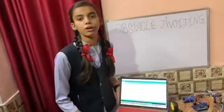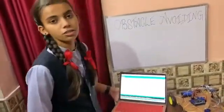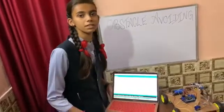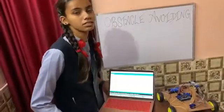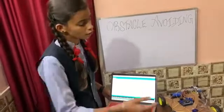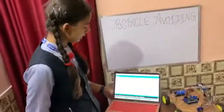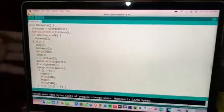Now I'm going to explain the obstacle avoiding function. In this function, we have used a supporting function named ultrasonic. The ultrasonic function returns the distance of the object from our ultrasonic sensor. It checks whether the distance is greater than 40 centimeters or not. If it is greater than 40, it moves in the forward direction.